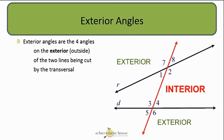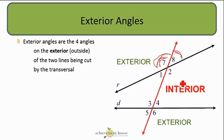Similarly, exterior angles are the four angles on the outside of the two lines being crossed by the transversal. So in this diagram, angle seven, angle eight, angle five, and angle six are all exterior angles.